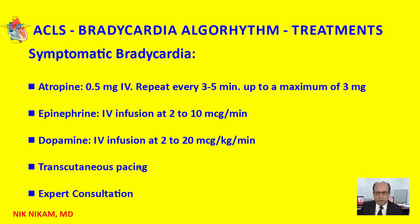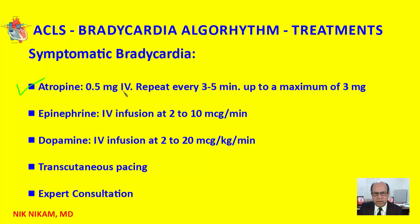Let's talk about the medical and pacing options available for patients with bradycardia or bradyarrhythmia. The most commonly used medication is atropine, 0.5 milligrams given intravenously as a bolus. This can be repeated every three to five minutes up to a maximum of three milligrams, after which no more atropine can be used.